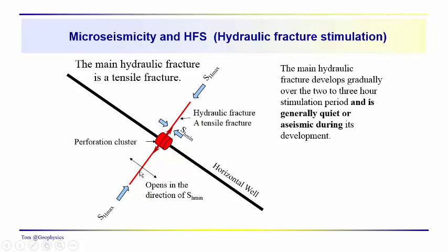With our well oriented normal to SH max, the hydraulic fracture that we open is perpendicular to SH min — that's the easiest direction for that fracture to open up in. Even if you don't drill your well perpendicular to SH max, the hydraulic fractures are still going to open up in the direction of SH min. We've also hoped to have fractured a lot of the natural fractures in the reservoir near the perforation cluster, giving us a lot of stimulation in that region. The hydraulic fracture is a tensile fracture — it's generally quiet and aseismic for the most part. The fractures that we do hear are those created by shear failure along the natural fractures in the reservoir.